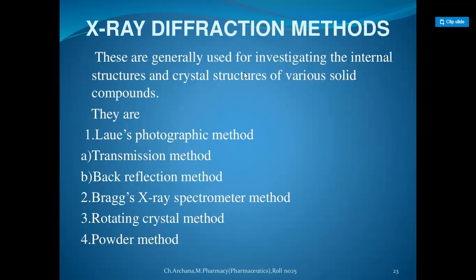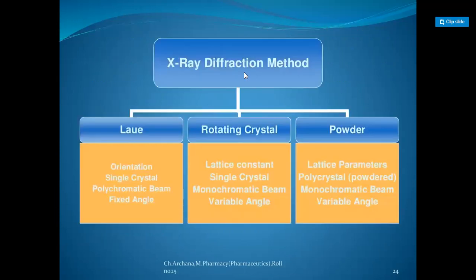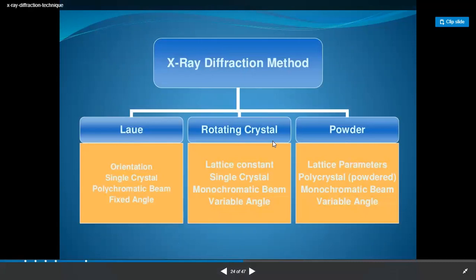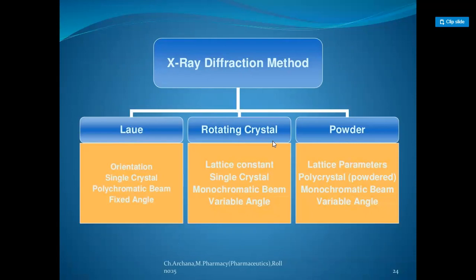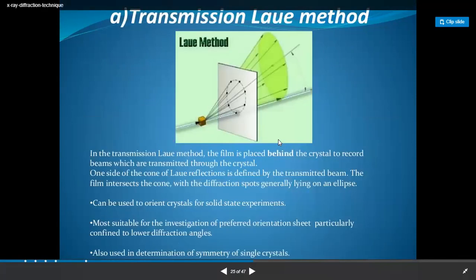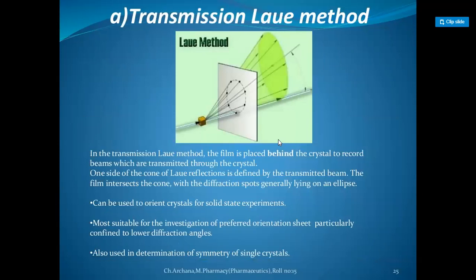X-ray diffraction methods include the Laue photographic method, Bragg X-ray spectrometer method, rotating crystal method, and the powder method. In the transmission Laue method, the film is placed behind the crystal to record beams transmitted through the crystal. The film intersects the cone with diffraction spots lying on an ellipse. This method is used to orient crystals for solid-state experiments, is most suitable for investigating preferred orientation, and is confined to lower diffraction angles and determination of symmetry of single crystals.